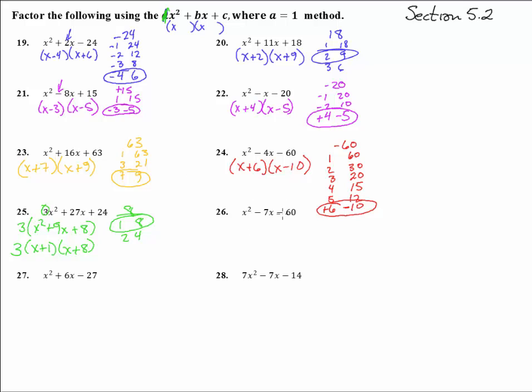Number 26. We've got this negative 60 again. Let's just use this list right up here. We've got to add to a negative 7. So subtracting. That one gives us 4. 15 and 4 would give us 11, but this guy right here, 5 and 12. If you have a negative 12 and a positive 5, we get x plus 5 and x minus 12. See if that really works. Does that add to a negative 7 and times to a negative 60? It does indeed.